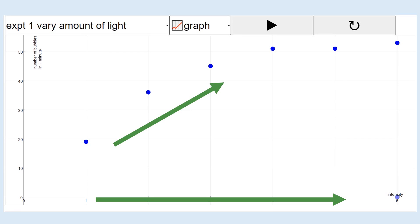However, at a certain point around about a light intensity of four, we seem to get to a peak and it starts to level off. No matter how much we increase the light intensity, the number of bubbles produced in one minute stays roughly the same at just above 50.